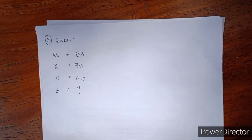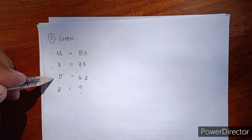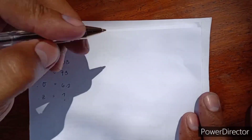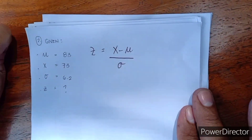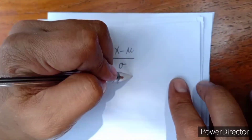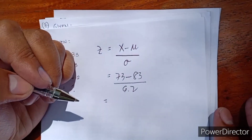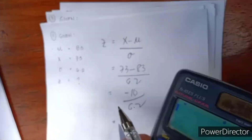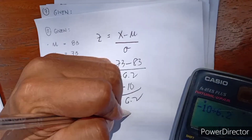Let's have example number two. Our given: mean is equal to 83, raw score is equal to 73, standard deviation is equal to 6.2. Let's compute for Z. Our formula is Z is equal to raw score minus mean, all over standard deviation. So X is 73 minus 83, all over 6.2. We have 73 minus 83 is negative 10, all over 6.2. Using our calculator: negative 10 divided by 6.2 gives Z equal to negative 1.61.